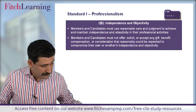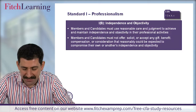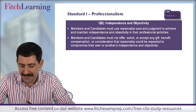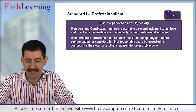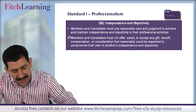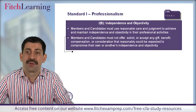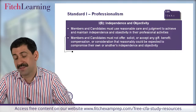Moving on to Standard 1B: Independence and Objectivity. Members and candidates must use reasonable care and judgment to achieve and maintain independence and objectivity in their professional activities. You must not offer, solicit, or accept any gift, benefit, compensation, or consideration that reasonably could be expected to compromise your own or another's independence and objectivity. Keep in mind this is not a blanket ban on receiving gifts; however, gifts shouldn't be so large as to influence somebody's decision-making or behavior.